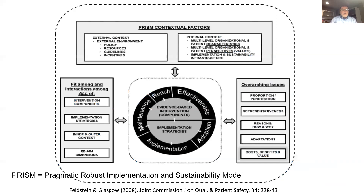In particular, PRISM has one semi-unique factor that we call the implementation and sustainability infrastructure. Moving to the center of the figure, you can see our RE-AIM dimensions organized around the circle. At the top of the center is the evidence-based intervention or key intervention components. On the bottom part of the circle is the implementation strategies — the how — that the evidence-based intervention is delivered.